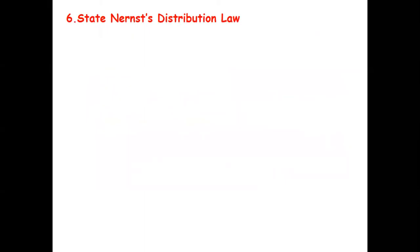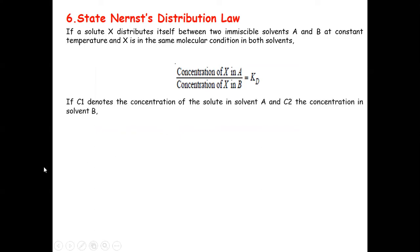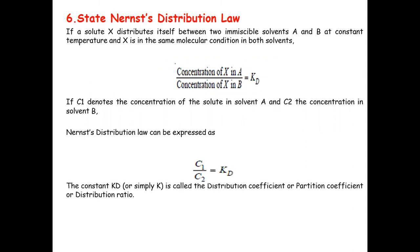State the Nernst distribution law. If solute X distributes itself between two immiscible solvents A and B at constant temperature, and X is in the same molecular condition in both solvents, then: concentration of X in A / concentration of X in B = KD. If C₁ denotes the concentration of solute in solvent A and C₂ the concentration in solvent B, the Nernst distribution law is expressed as C₁ / C₂ = KD, where KD is called the distribution coefficient, partition coefficient, or distribution ratio. This concludes the discussion on partition coefficient of iodine in water and carbon tetrachloride. Thank you.